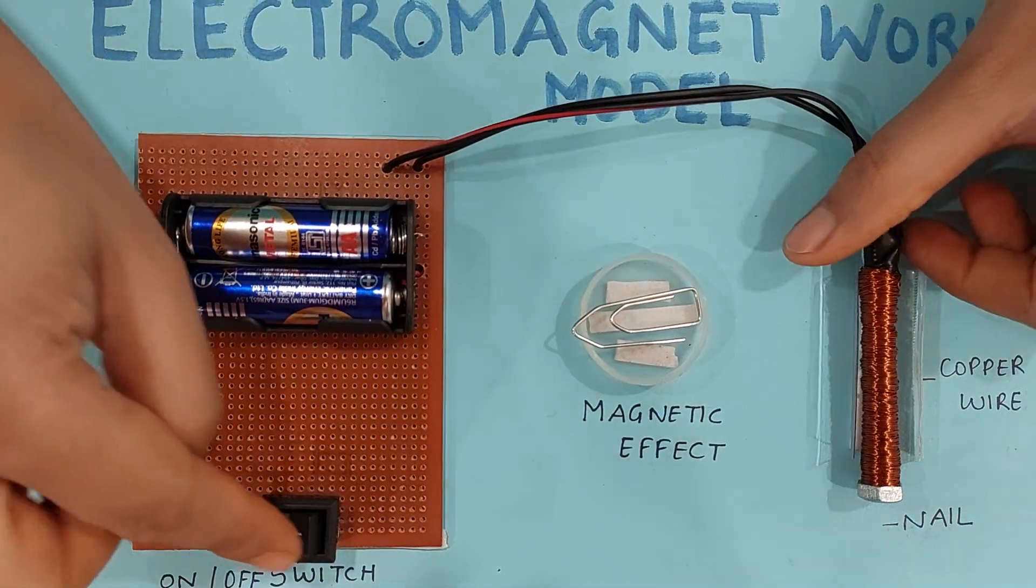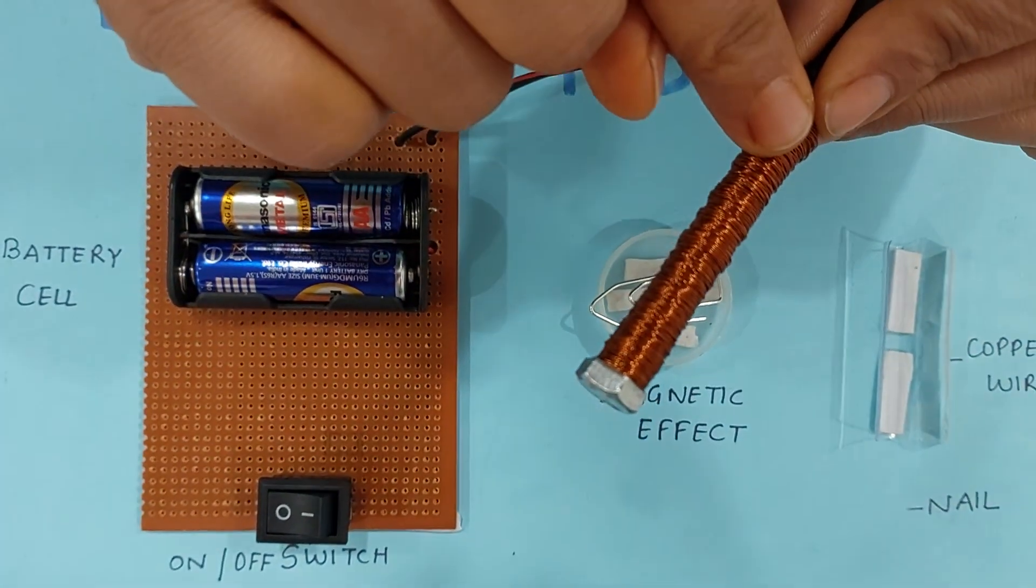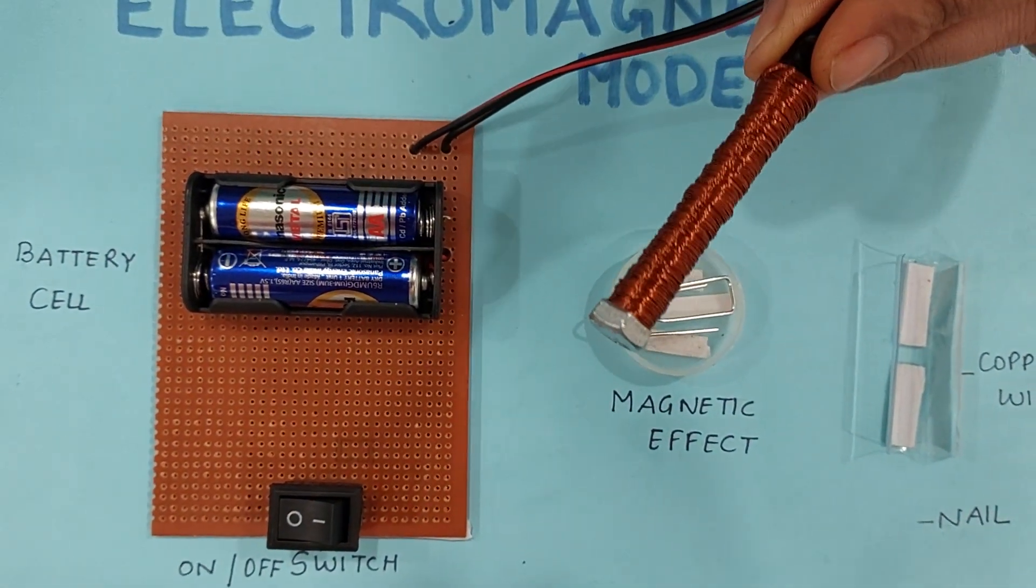Magnetic effect of electric current means when I will pass electric current to this iron nail, this iron nail will behave like a magnet. Now let's see how it works.